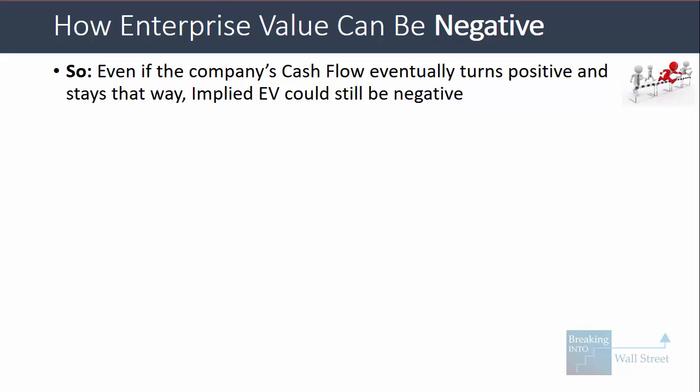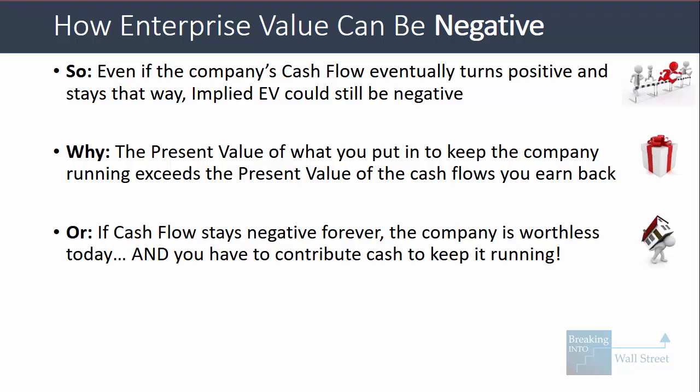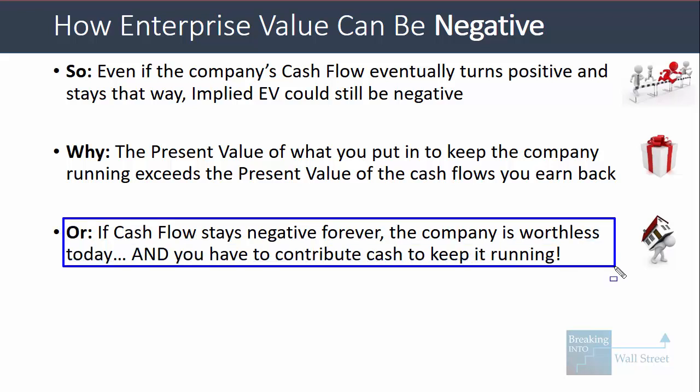Even if a company's cash flow eventually turns positive and stays that way, its implied enterprise value could still be negative. The reason: the present value of what you put in to keep the company running exceeds the present value of the cash flows you earn back. In the early period, you the investor need to keep putting money in to fund the company. Eventually cash flow turns positive, but what you get back much further in the future may not be worth enough. If cash flow stays negative forever, the company is worthless today and you have to contribute cash just to keep it running.